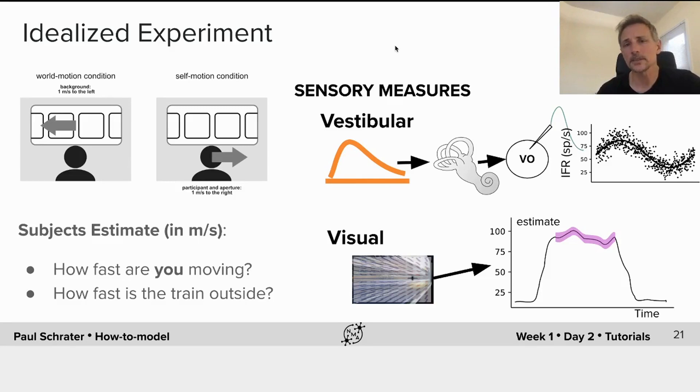The self motion of interest is captured by something called the otolith organ, which is in our inner ear, and that signal is noisily transduced and sent to our brain through the vestibular system. The other signal, which we've already seen,